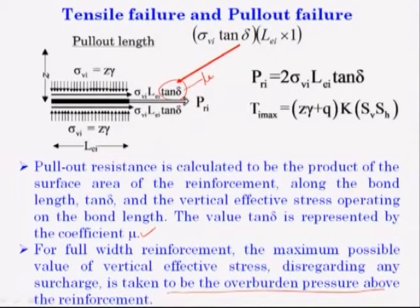The maximum possible value of vertical effective stress, disregarding any surcharge, is taken to be the overburden pressure above the reinforcement. Without any surcharge, Q equals zero, so this comes out to be gamma·z · S_B · S_H.